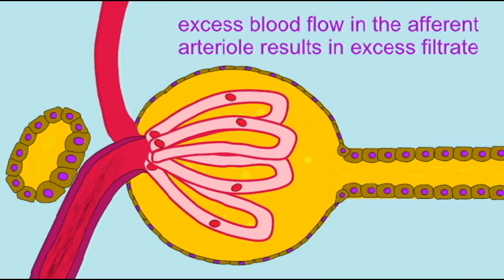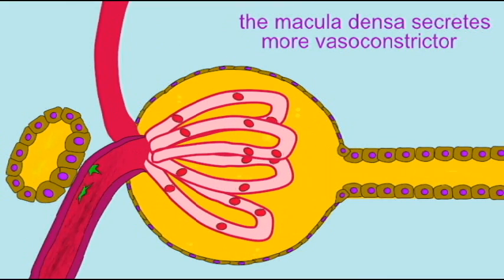If the blood pressure in the afferent arteriole is too high, then too much filtrate will be formed from the glomerular capillaries. The macula densa perceives this, that too much filtrate is being formed. As a result,